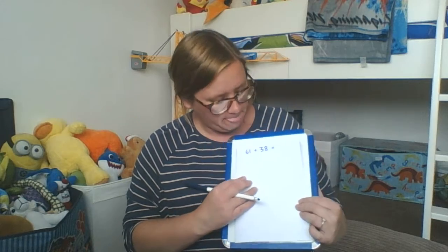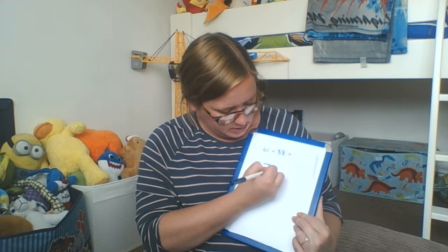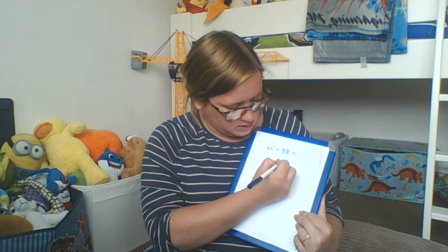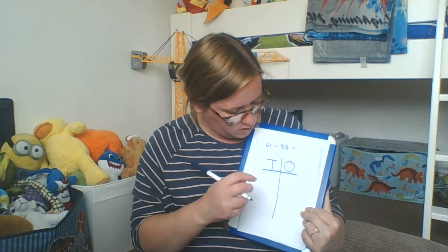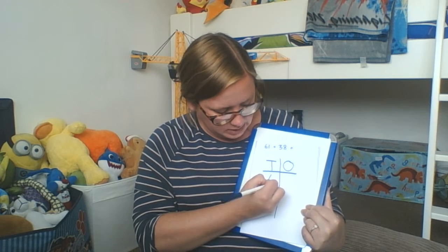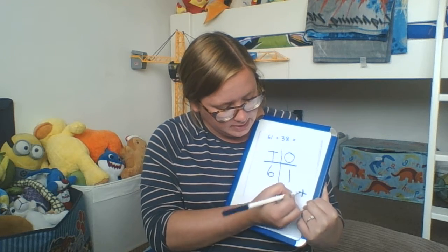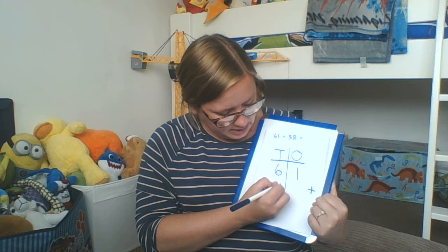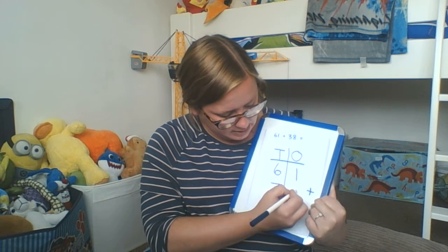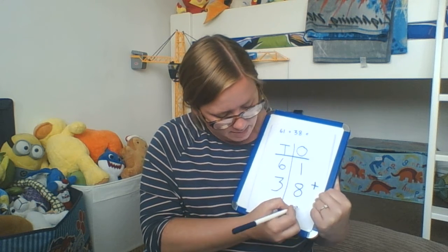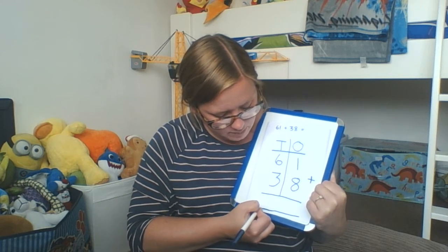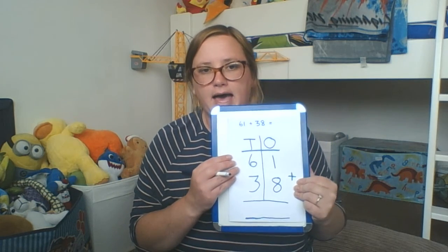One more practice, and then we're going to look at column addition and subtraction with exchanging, but not yet. So, tens and ones — that really helps me to see clearly what I'm working with. I've got 61, which is 6 tens and 1 one, then my addition symbol, plus 38 which is 3 tens and 8 ones, and then my nice big equal sign at the bottom.